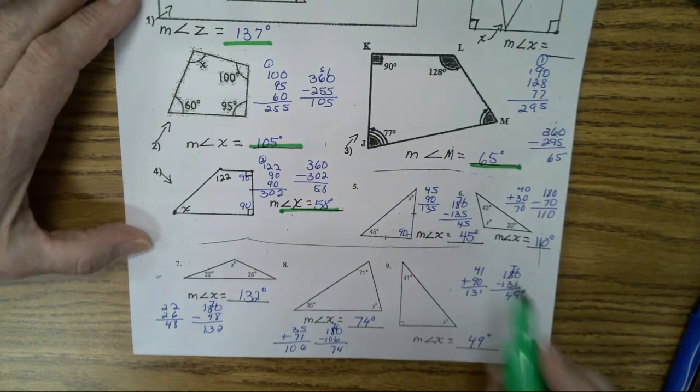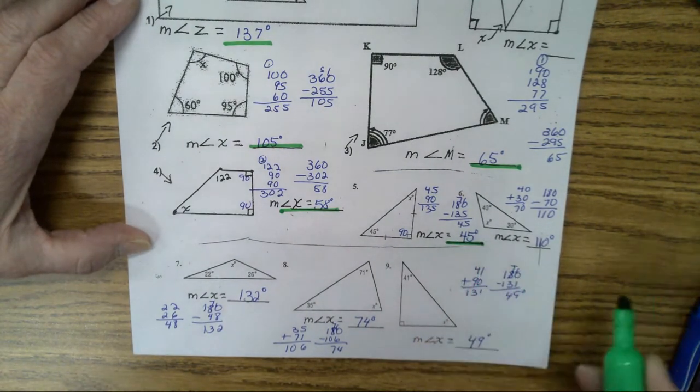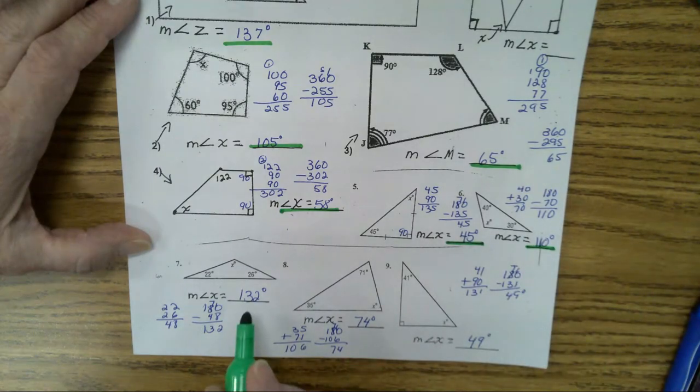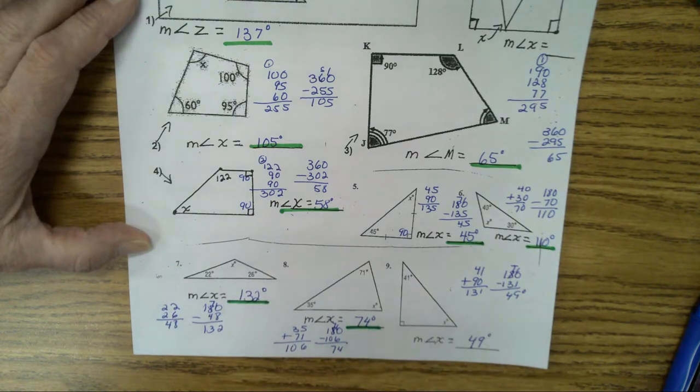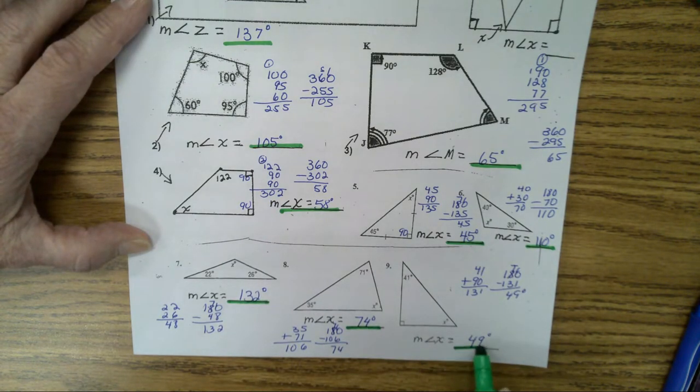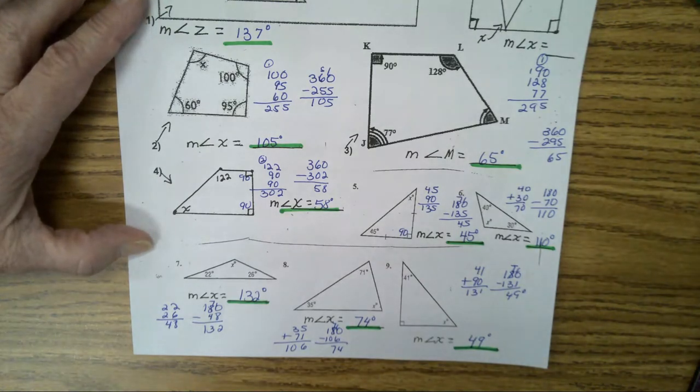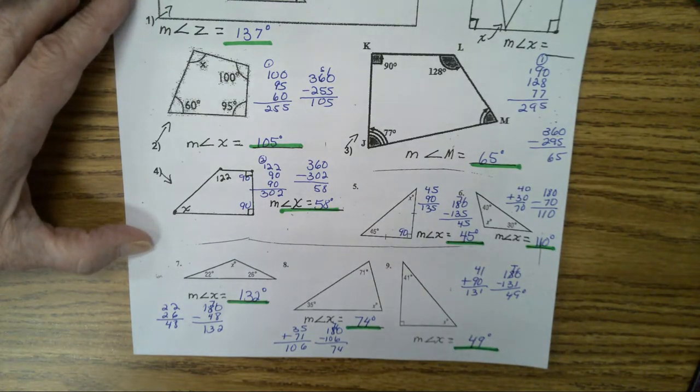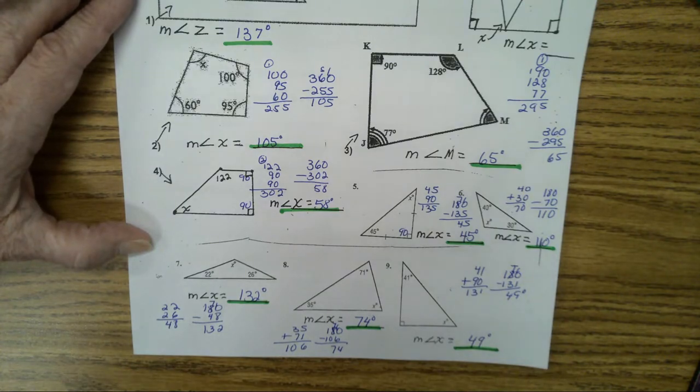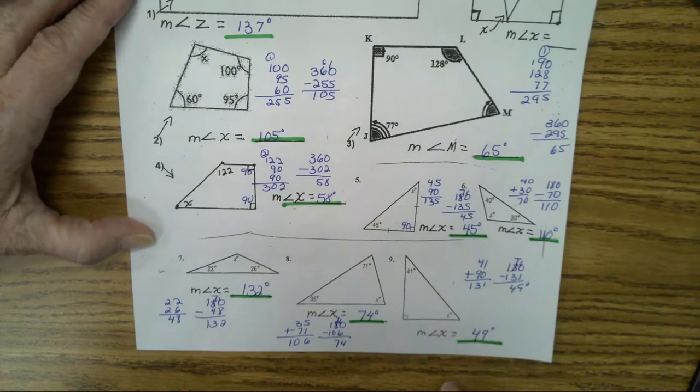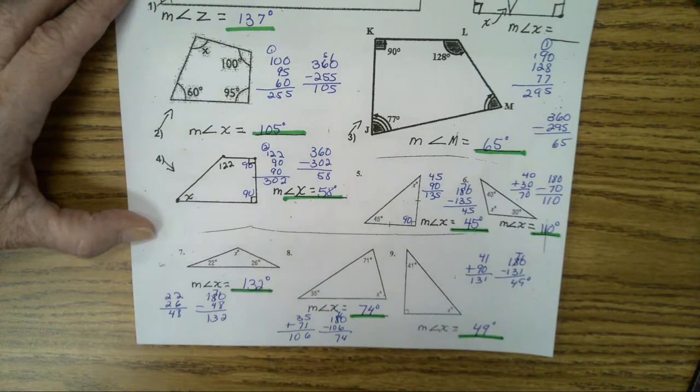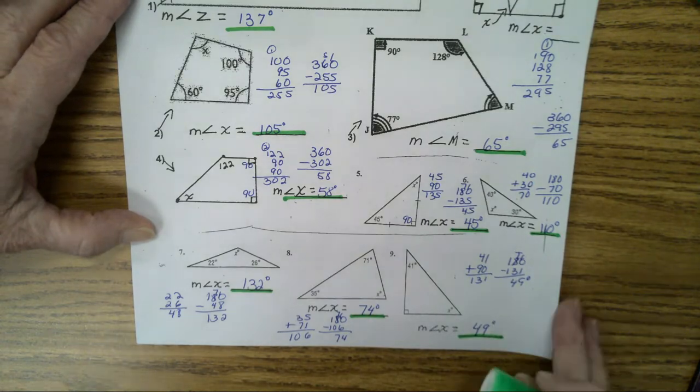Number five, 45 degrees. 110 degrees for six. Number seven, 132 degrees. Number eight, 74 degrees. And number nine is 49 degrees. Kids, I will be collecting this packet and you will be getting points for each problem on the packet. So make sure you do your work. I'm giving you the answers. It should be an easy grade for you. Can't just have the answers down though. You have to show the work. For this page, now let's go to the next page.